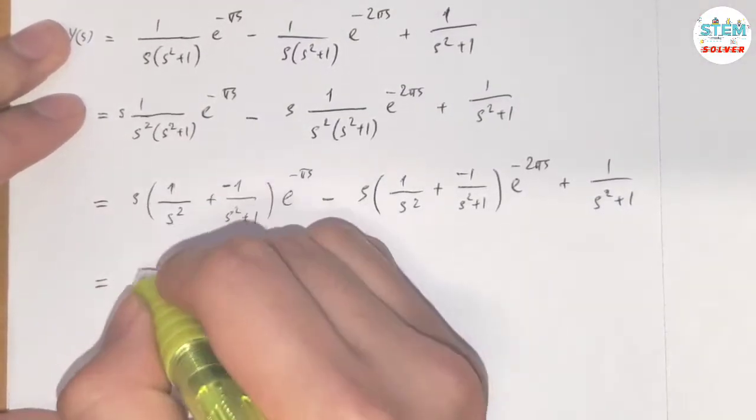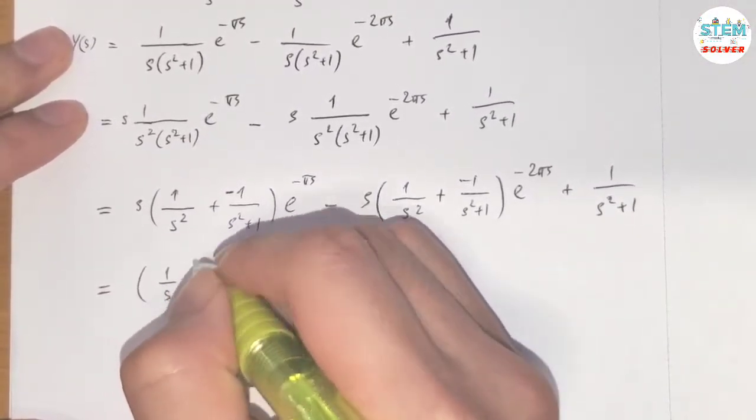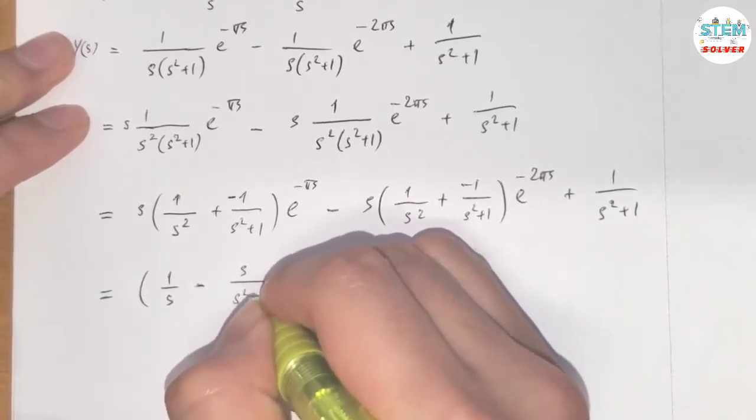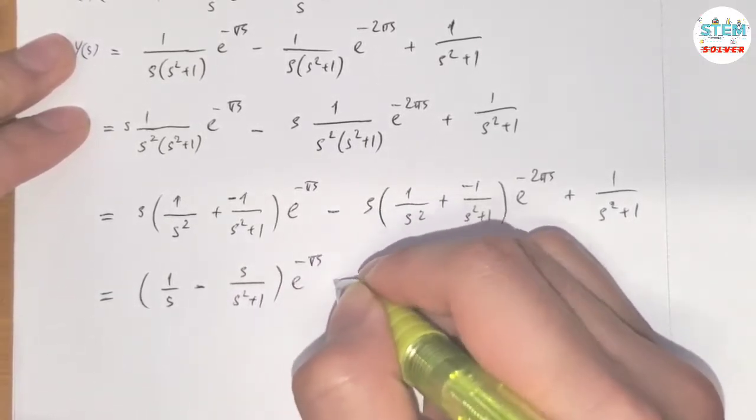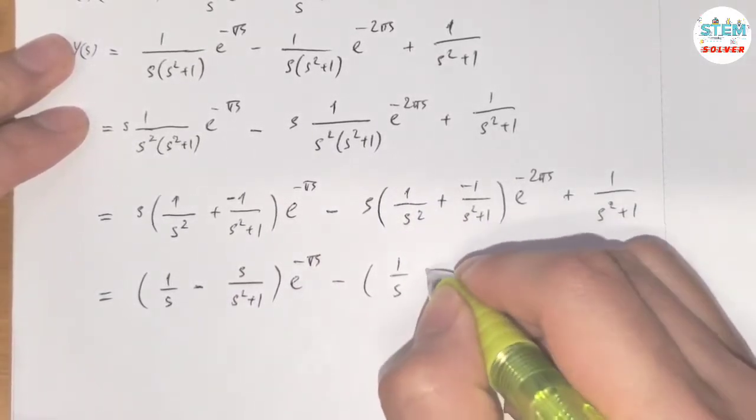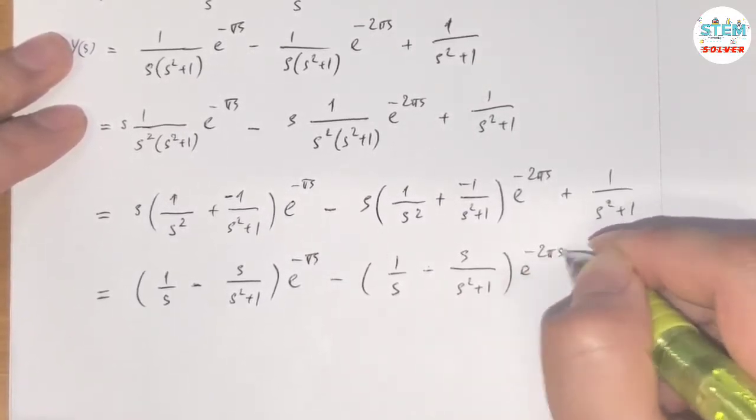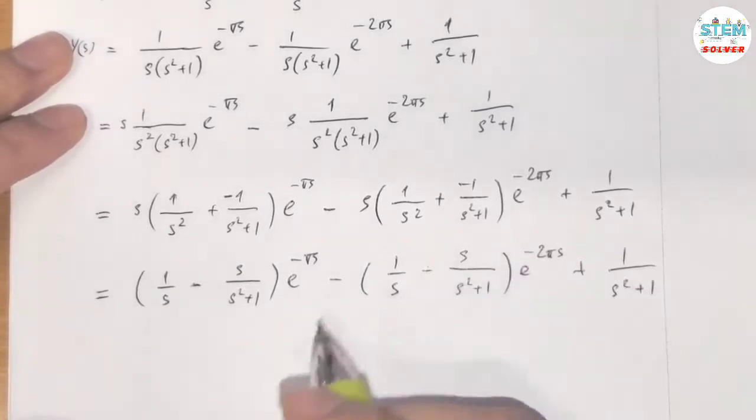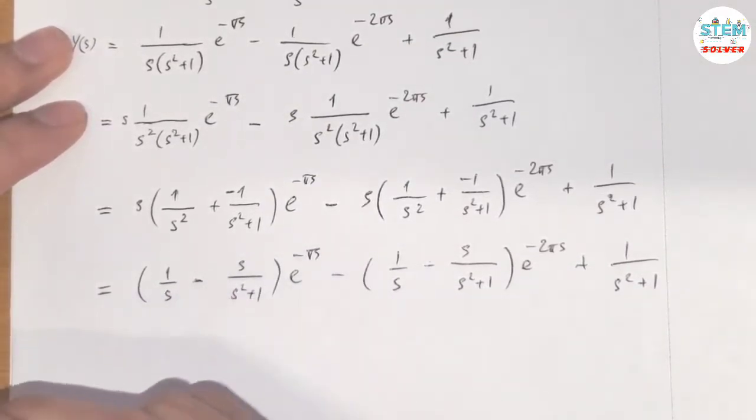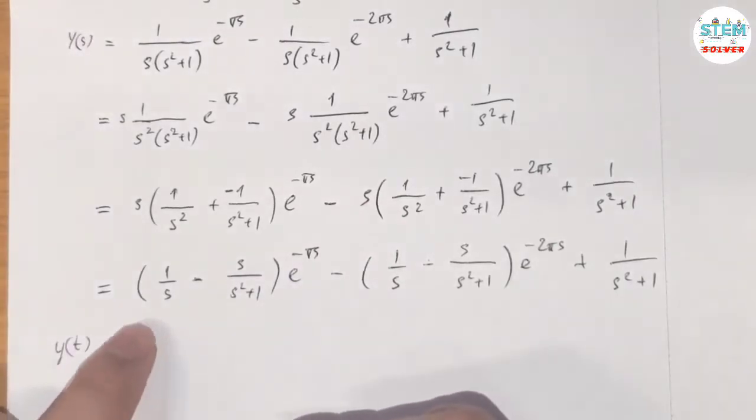Okay, now distribute by s. So I have 1/s - s/(s² + 1) e^(-πs) - 1/s - s/(s² + 1) e^(-2πs) + 1/(s² + 1). Now it's ready. We're ready to find the inverse.